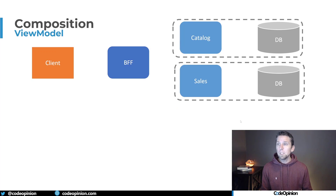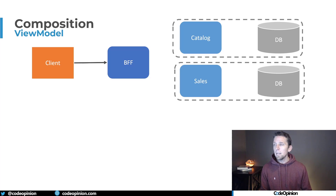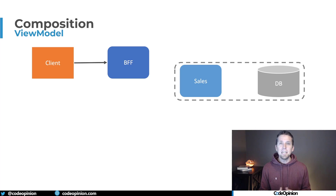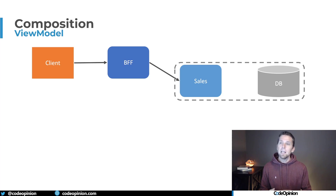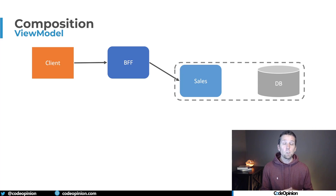When we think about our original situation where the client hits the BFF, the BFF doesn't need to hit two different services anymore. It doesn't need the catalog service; it can simply go to the sales service, because the sales service now has the name, the image, as well as the price it owns.